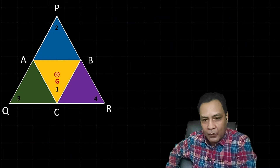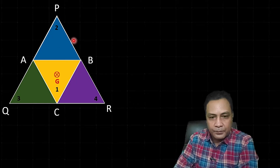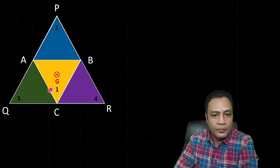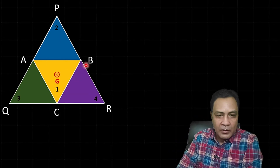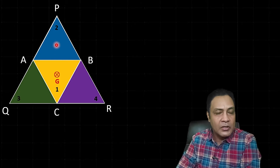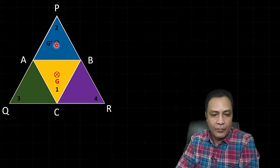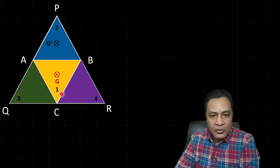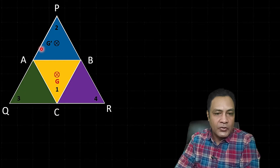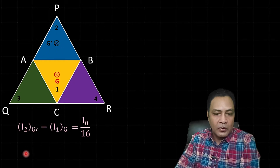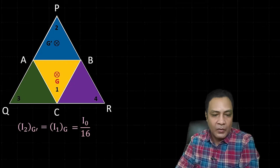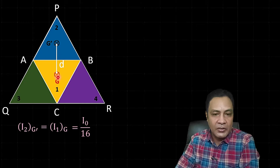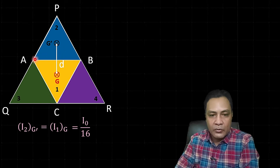Now let's look at part 2. G is the center of mass of the whole triangle, and G' is the axis passing through the center of mass of part 2 and perpendicular to its plane. G and G' are parallel axes. I need to find the moment of inertia of part 2 about G using the parallel axis theorem, with D being the distance between the two axes.